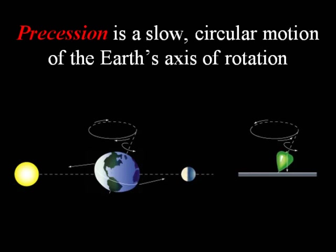One dramatic effect, but very, very small over a human lifetime, is the term precession. By this definition, it's a slow circular motion of the Earth's axis. You could also describe it as a slight wobble.